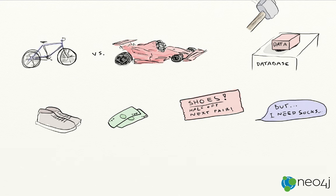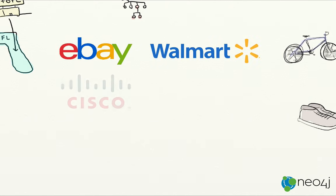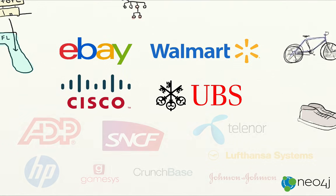This is just one example. The need to make quick sense of data relationships exists everywhere. Neo4j has been proven with a wide range of customers, including eBay, Walmart, Cisco, UBS, and many, many more.